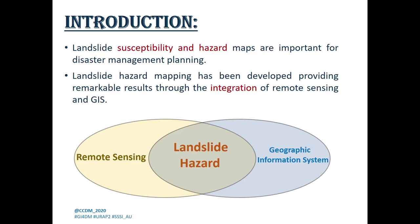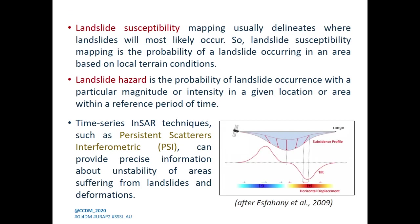First of all, landslide susceptibility and hazard maps are important for disaster management planning. Landslide hazard mapping has been developed, providing remarkable results through the integration of remote sensing and GIS. Sometimes the terms susceptibility and hazard are erroneously used as synonyms. Therefore, some so-called hazard maps are actually just susceptibility maps, as they don't consider the temporal and intensity dimensions along with the spatial aspects.